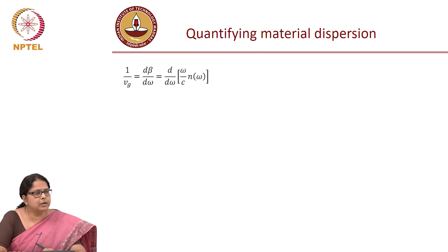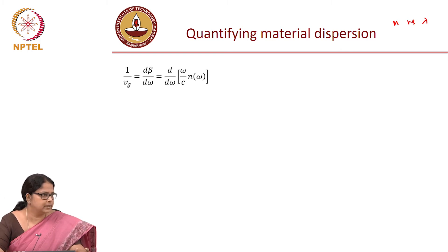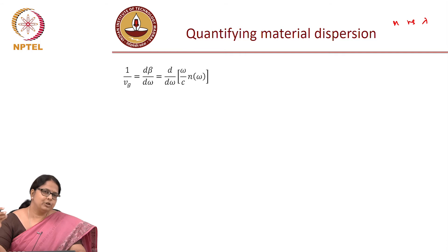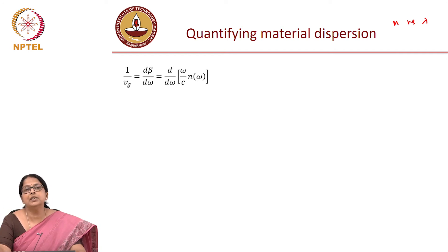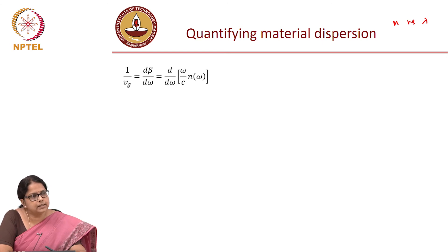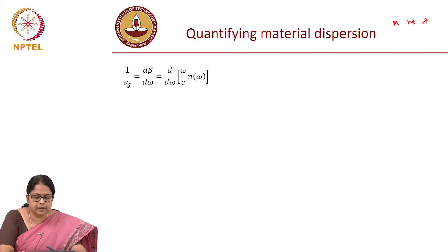Material handbooks always give us n versus lambda — refractive index as a function of wavelength. This is well-known information for silica. Doping will change the n versus lambda, and in fiber the core has a different doping from the cladding, so n versus lambda is different for core and cladding. Once you know n versus lambda you can always get n versus omega. We want to find the dispersion due to material property — specifically the delay between two spectral components — so we start from beta equals omega·n over c and differentiate.